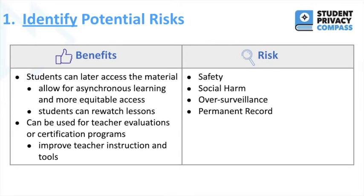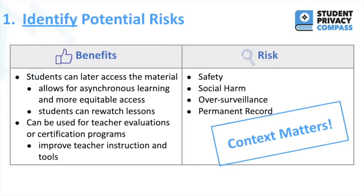The risk of over-surveillance gets to how students might feel knowing their classes are being recorded — do they no longer feel free to participate? And then there's the permanent record: how long are these recordings going to be stored, and will how students acted in these recordings be kept and shown to future teachers? The reason these risks are not exclusive is because context really matters when we discuss privacy. For example: what's the class subject? What's the age group? How many students are in the class? Are student cameras on? All of these questions may have different implications for the risk.